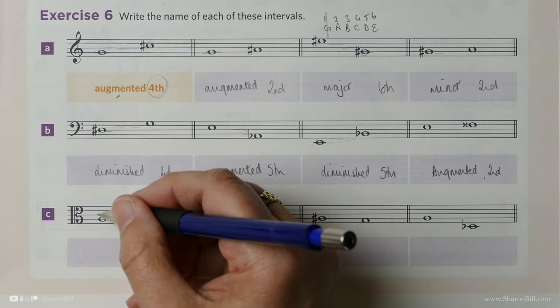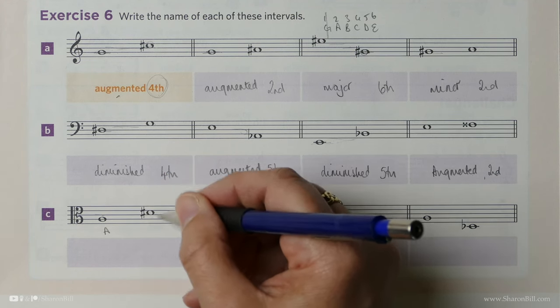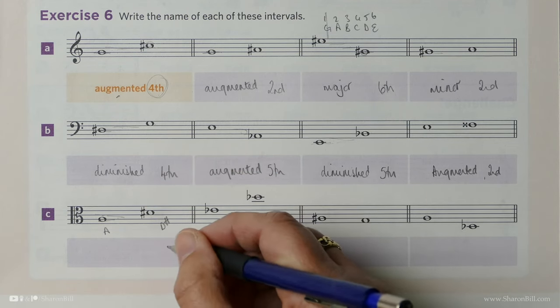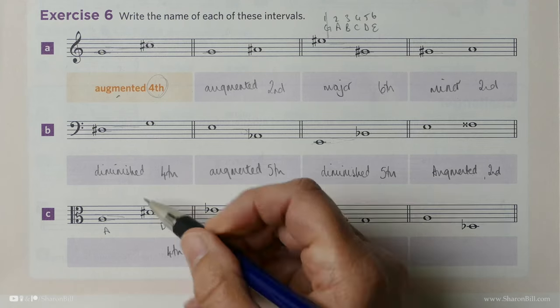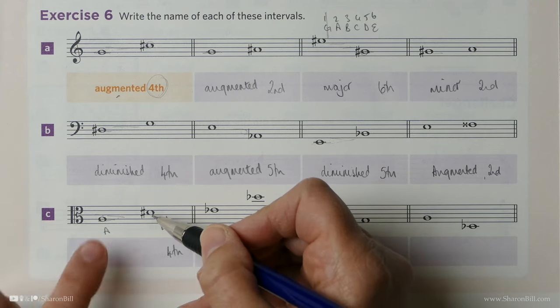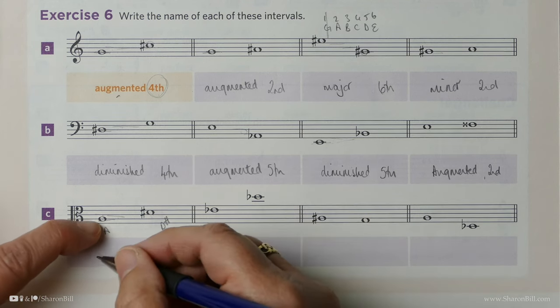So I'm hoping that you've been brave and had a go. I know it's tricky. So let's check these through together. This is a C, B, A to a D sharp. That's a 1, 2, 3. It's a 4th of some sort. Now we know that A to D is a perfect 4th. And then we've raised that D and that becomes augmented.